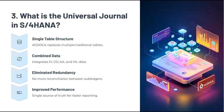Question 3: What is the Universal Journal in S4 HANA? The Universal Journal is a key innovation in S4 HANA, combining data from FI, CO, AR, and ML into a single table, ACDOCA. This eliminates data redundancy and provides a single source of truth for financial reporting, which is a huge leap forward in terms of data consistency and performance.